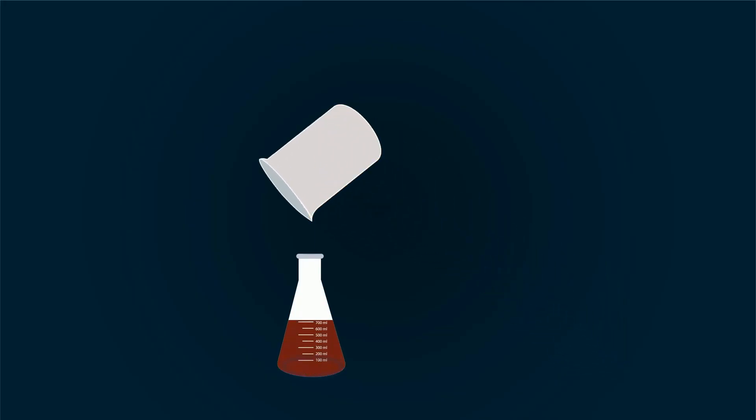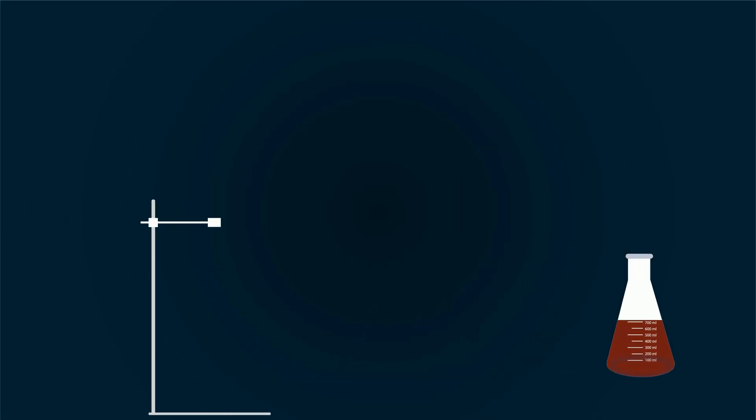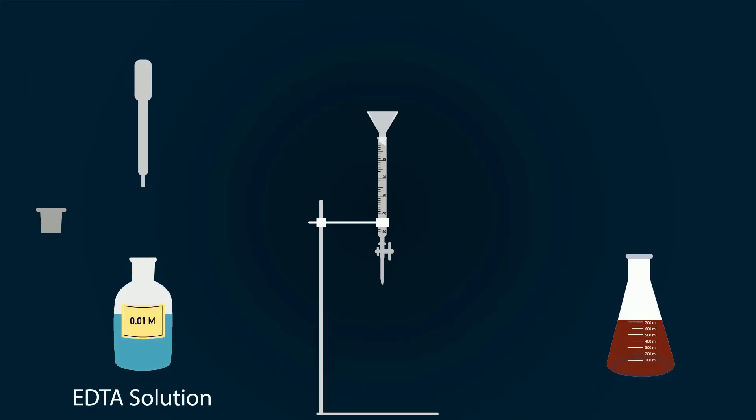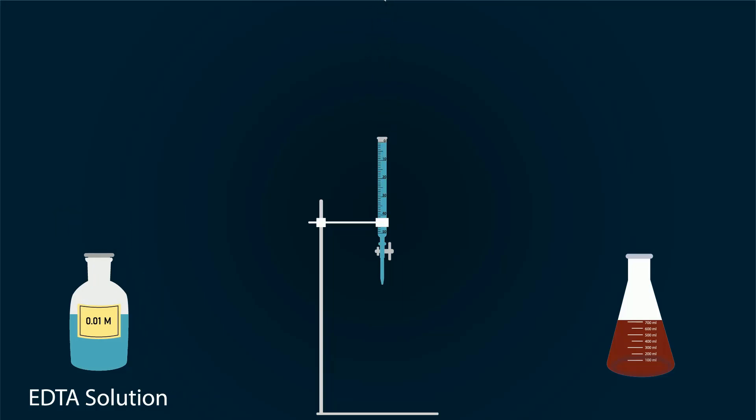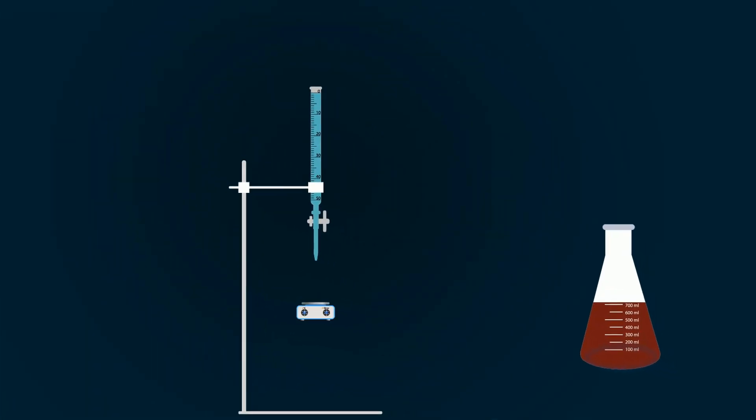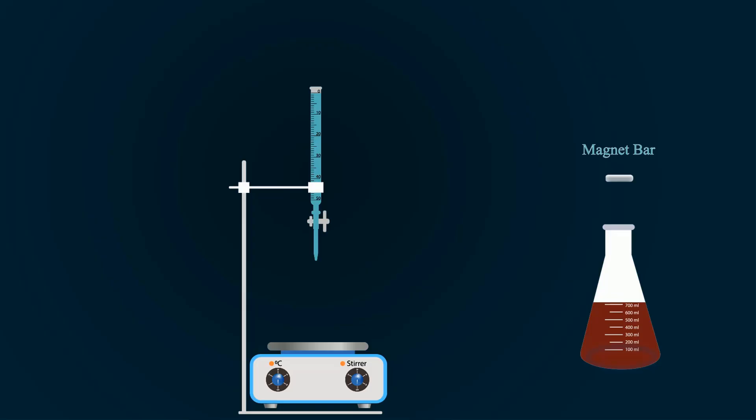Now put the solution into the conical flask. Now we have to start titration. For this, take a stand and add the burette on it. With the help of a funnel, fill EDTA into the burette up to the zero point. Add a magnet bar into the conical flask for continuous mixing and place the flask onto the magnetic stirrer.